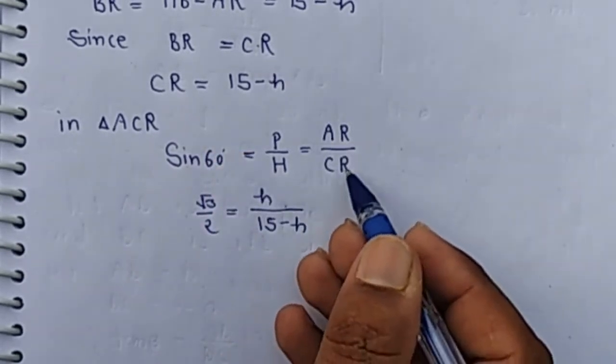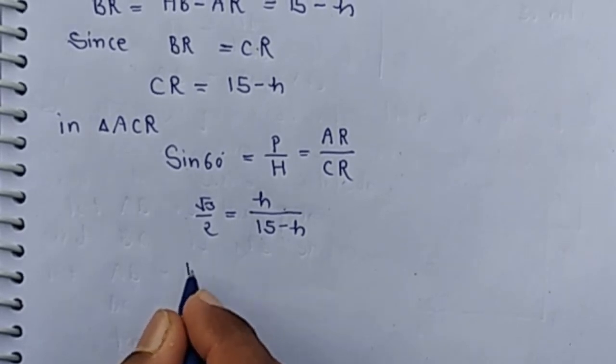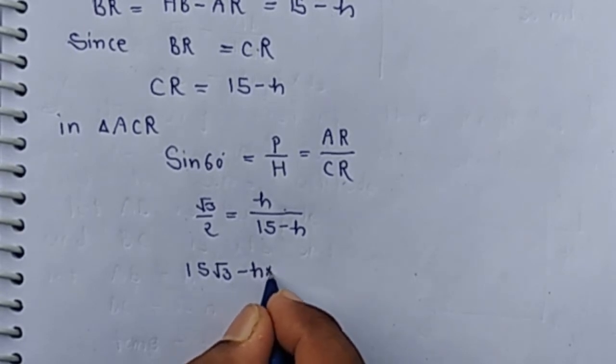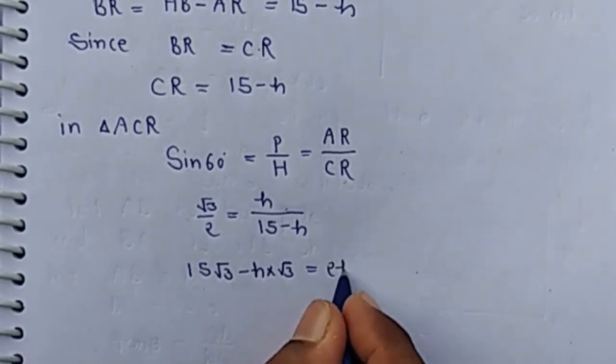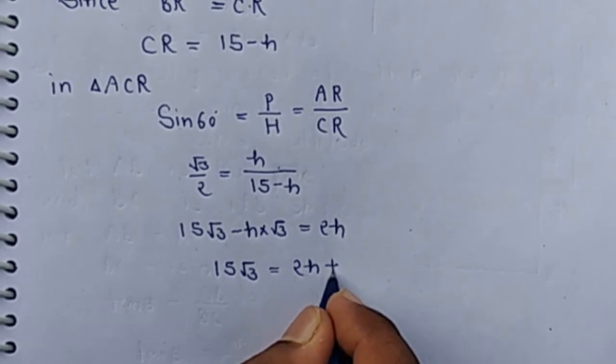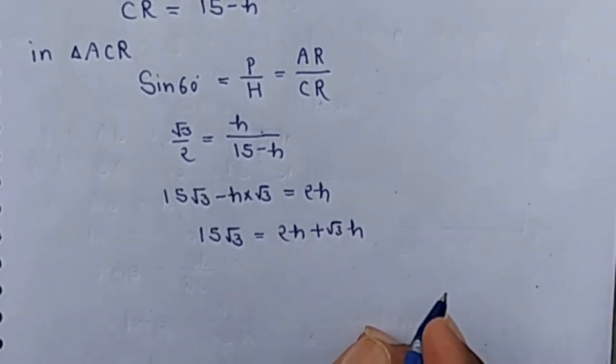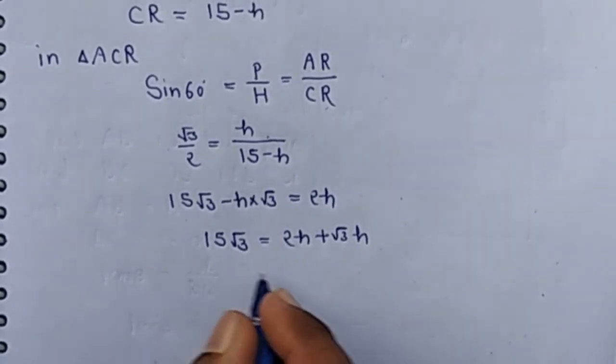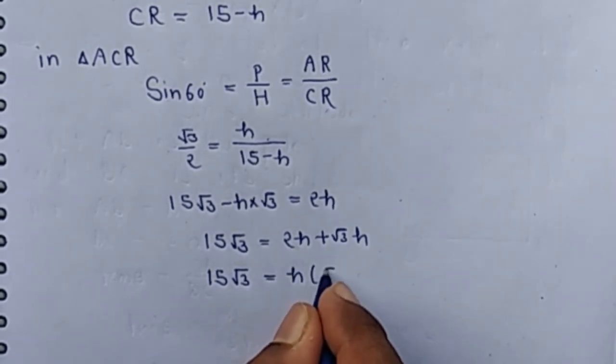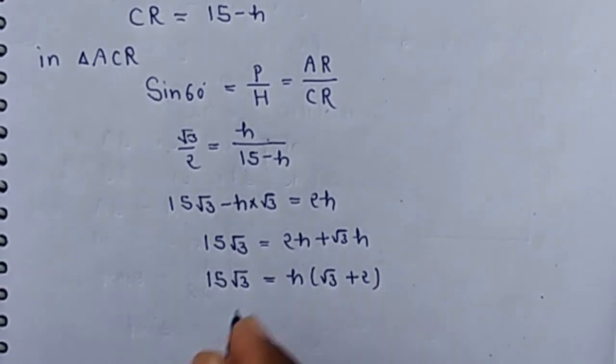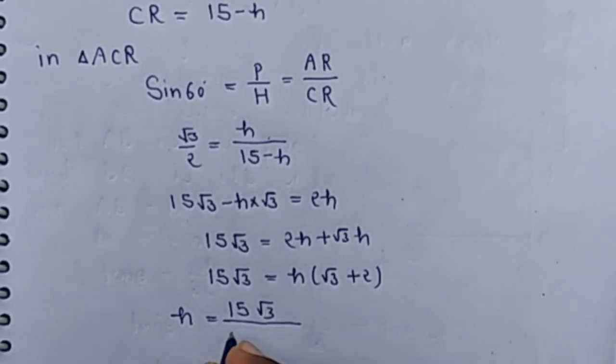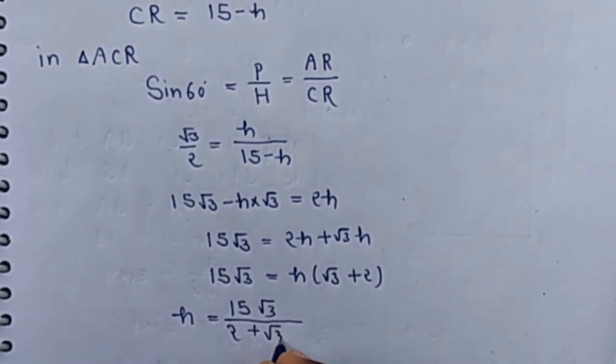Now cross-multiply. We have 15 root 3 minus H root 3 equal 2H. Now 15 root 3 equal 2H plus root 3 H. H equal 15 root 3 by 2 plus root 3.